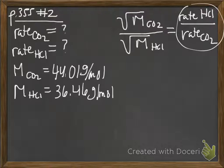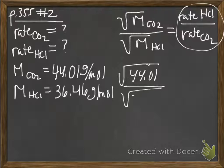If we go ahead and put in the numbers we do have, 44.01, square root of 44.01 over square root of 36.46.